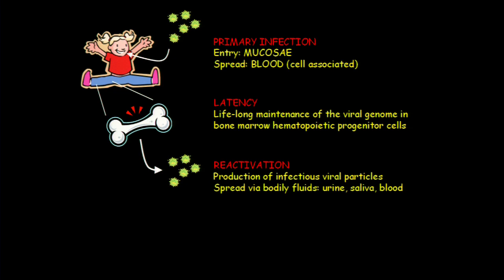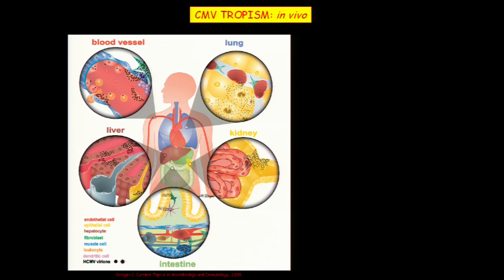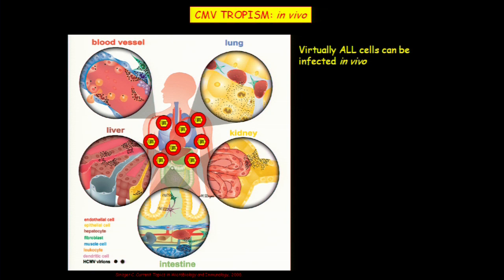From this lifestyle, it's clear that the virus has to interact with a lot of different cells. This mechanism of life is very different from that of other herpesviruses like herpes simplex, which infects basically epithelial cells and neurons. Because of this lifestyle, like all herpesviruses, CMV is considered to be incurable because it's actually never eliminated from infected individuals. In terms of tropism, CMV is a bit different than other herpesviruses — its tropism in vivo is unusually broad.